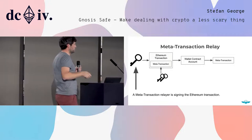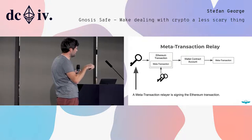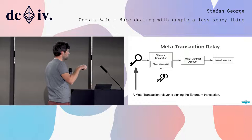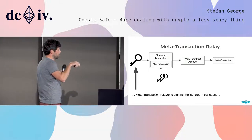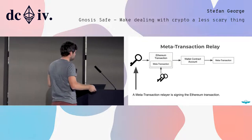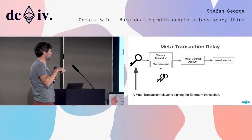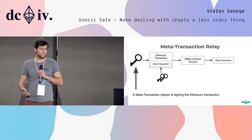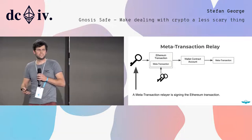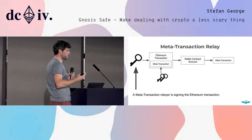So here's an overview of how it works: we have the meta transaction signed by anyone who owns the wallet contract account, and then someone has to send those meta transactions to the contract in an Ethereum transaction. This Ethereum transaction has to be signed by an account with Ether to incentivize miners. There's currently a group working on relayers where we can send those meta transactions, which will then sign the Ethereum transaction to broadcast the meta transaction to the Ethereum network. In the future, we might see meta transactions directly mined by miners, making relayers just an intermediary solution.